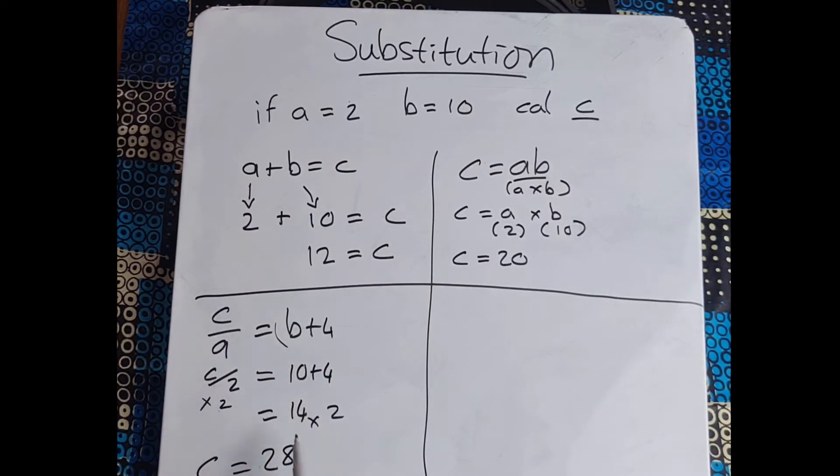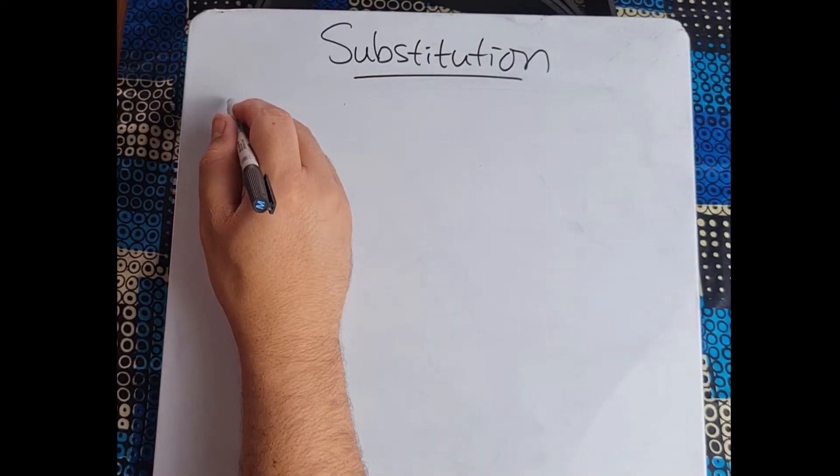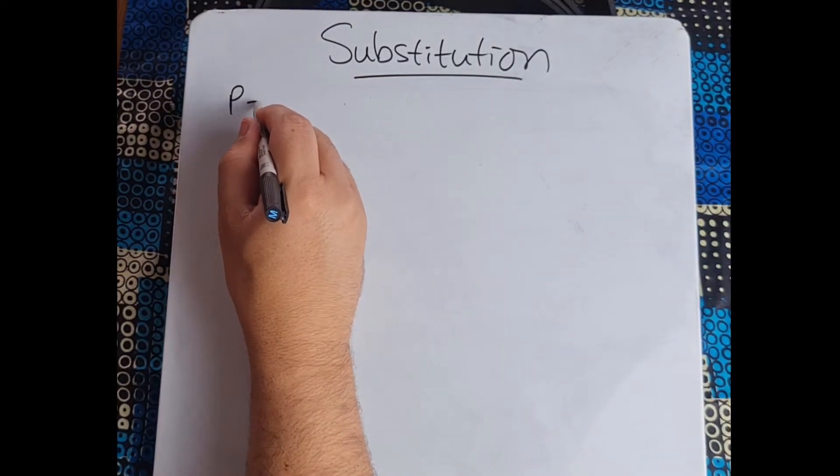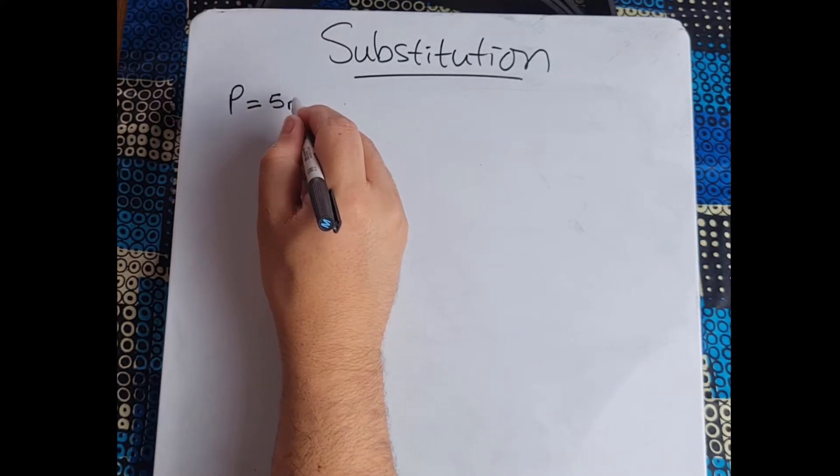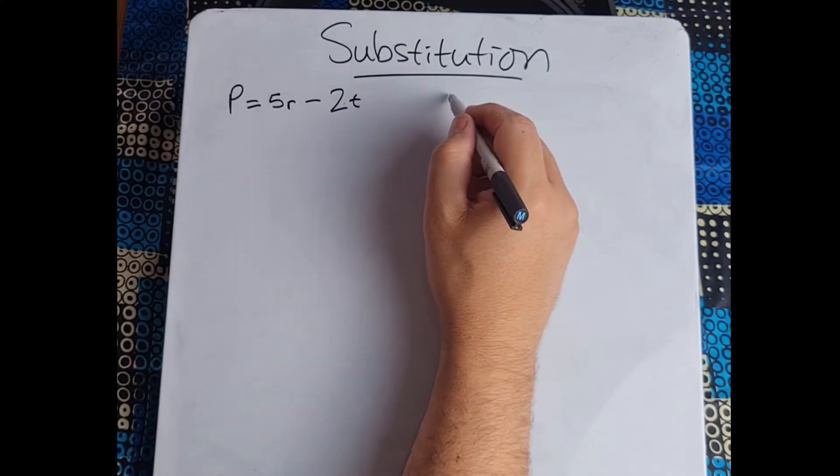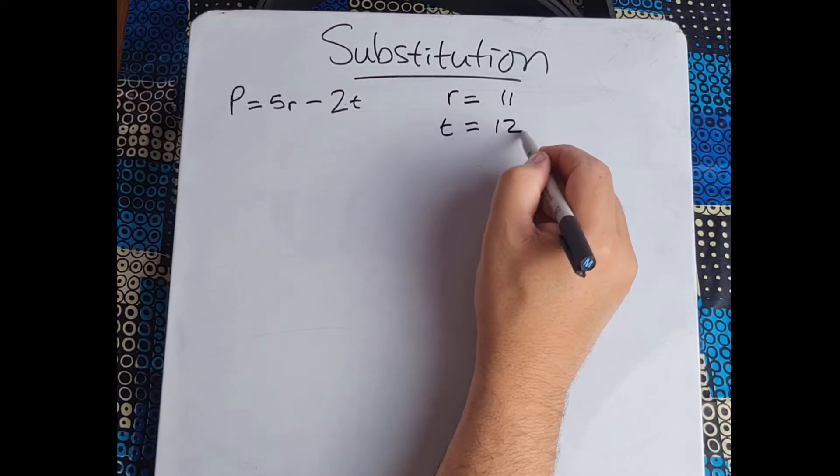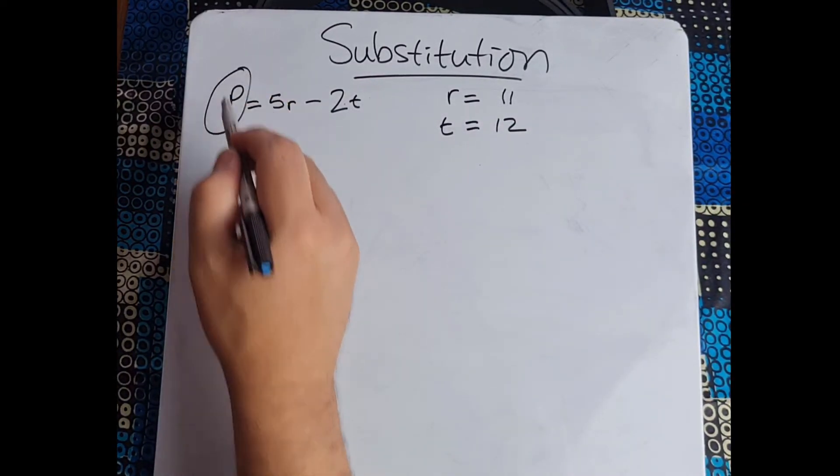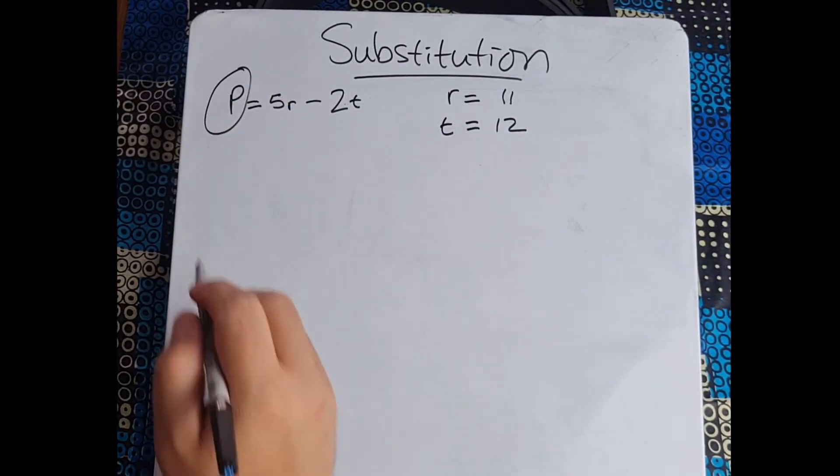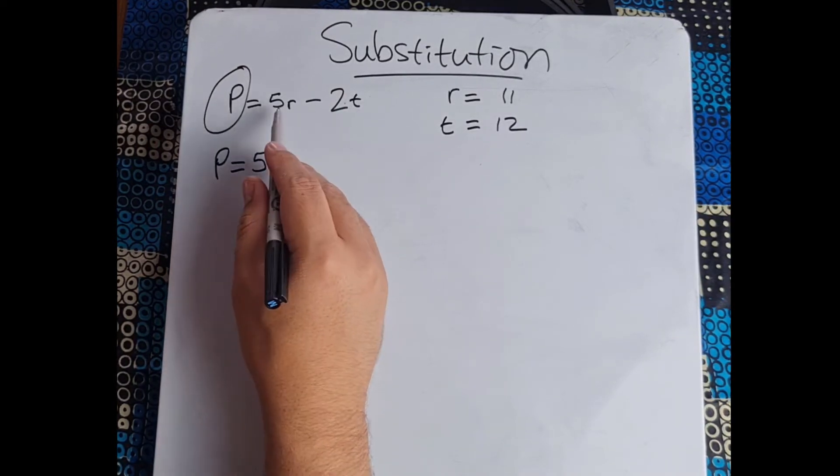So let's look at another two examples. This one says, well let's look at p if p equals 5r minus 2t and we know that r equals 11, t equals 12, then they want us to calculate what p is.